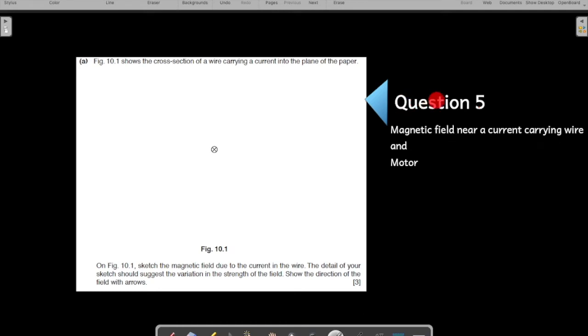Let us start with the practice of question number 5 on electromagnetism. This question relates to the topic of magnetic field near a current carrying wire and motors.